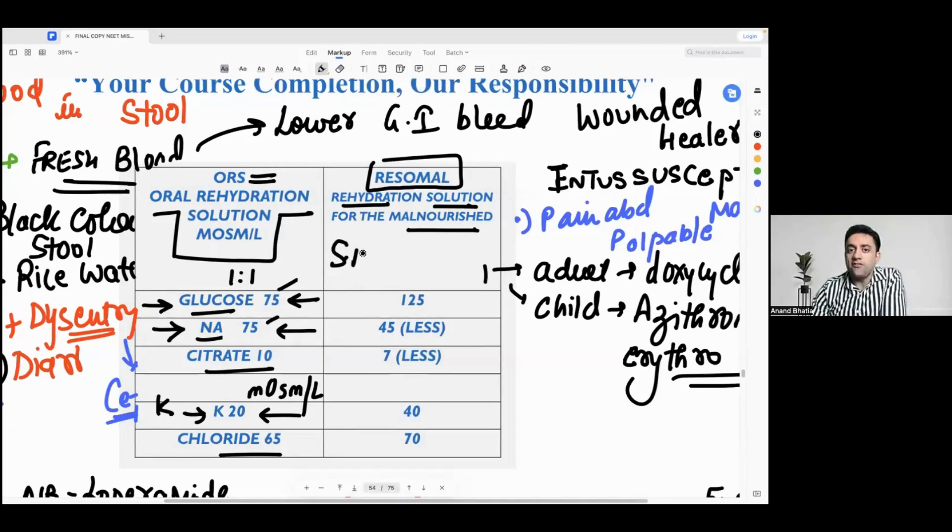For basic ORS, you take a one liter bottle of water and you put one packet of ORS. Whereas in a case of ReSoMal, you take two liter water and one packet of ReSoMal. You double the water - so you take two liters of water and add one packet of ReSoMal in that.